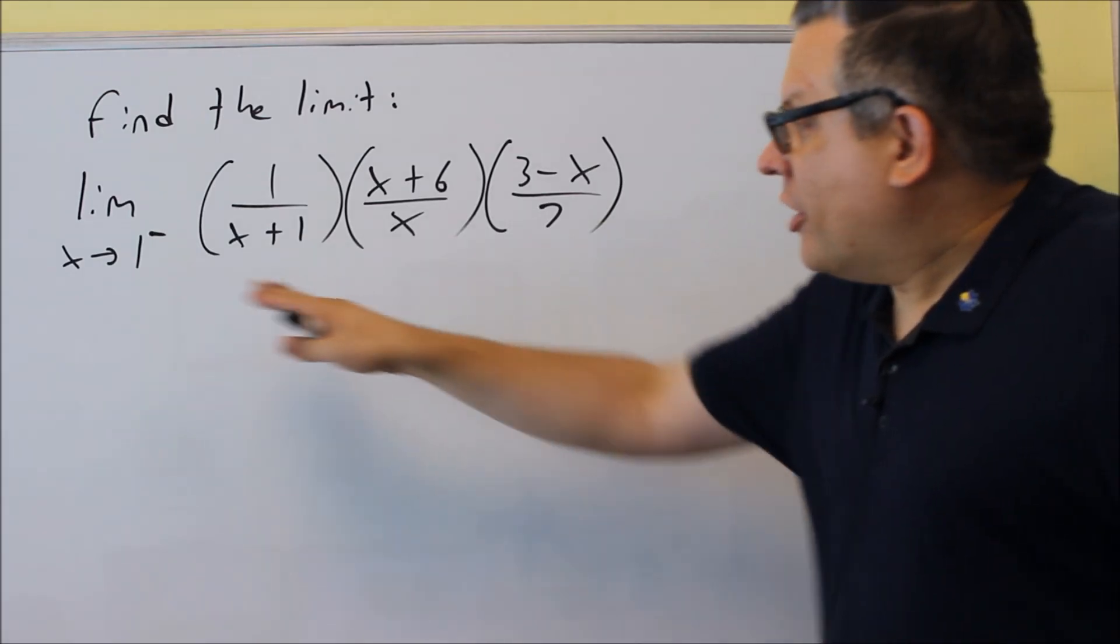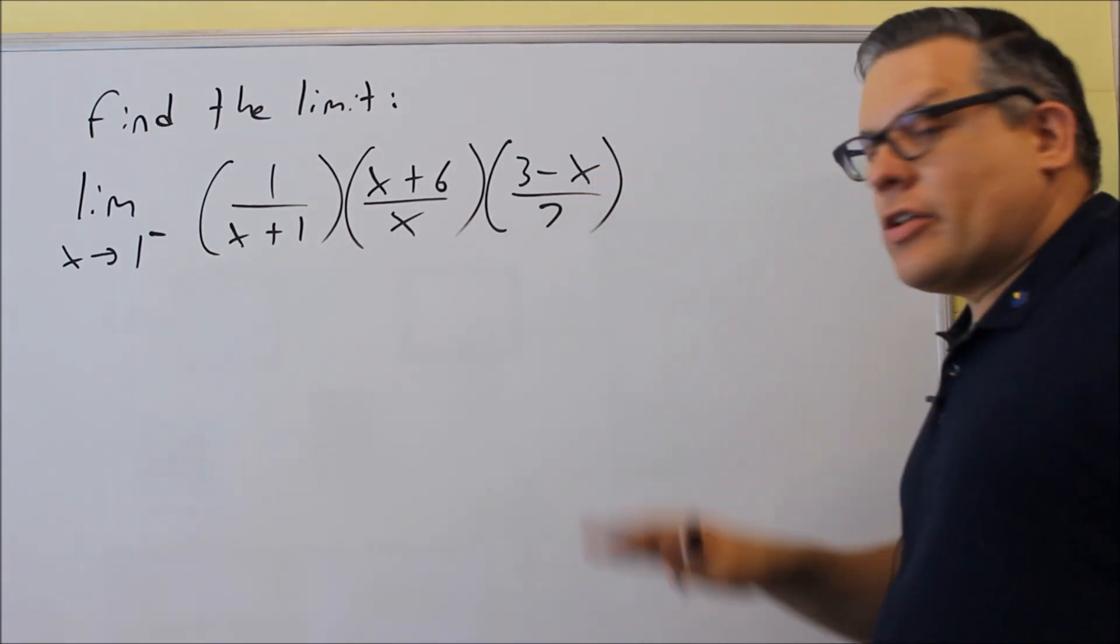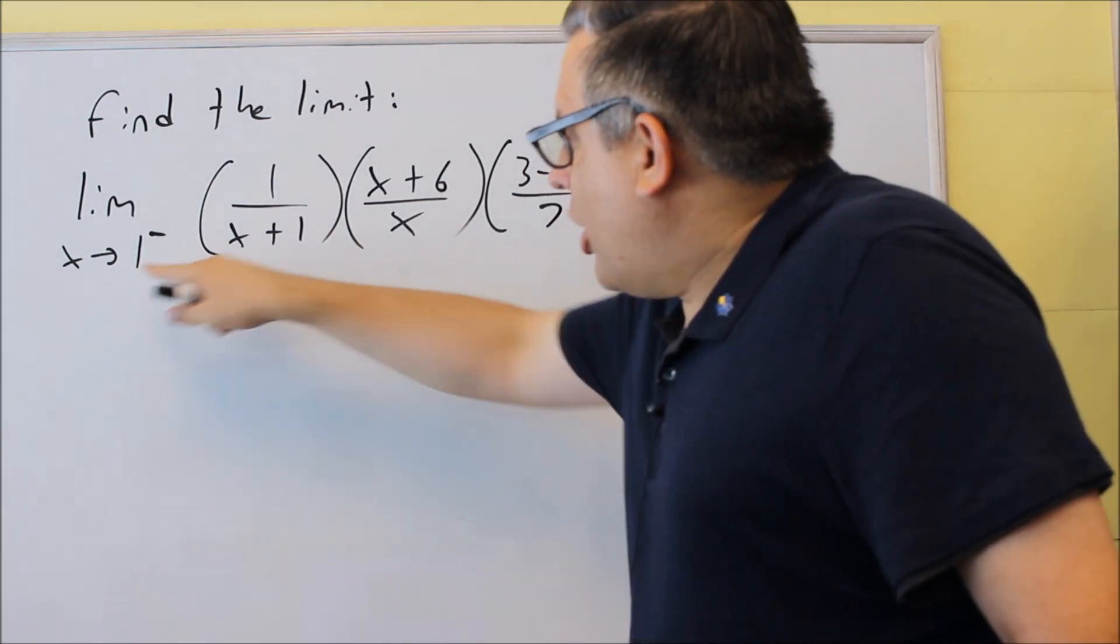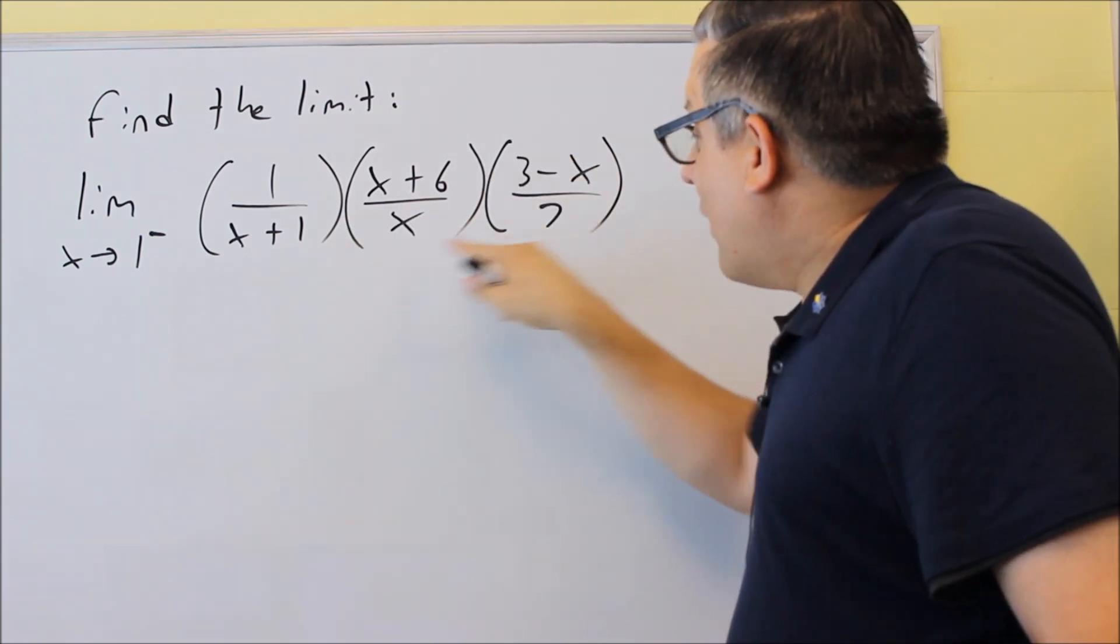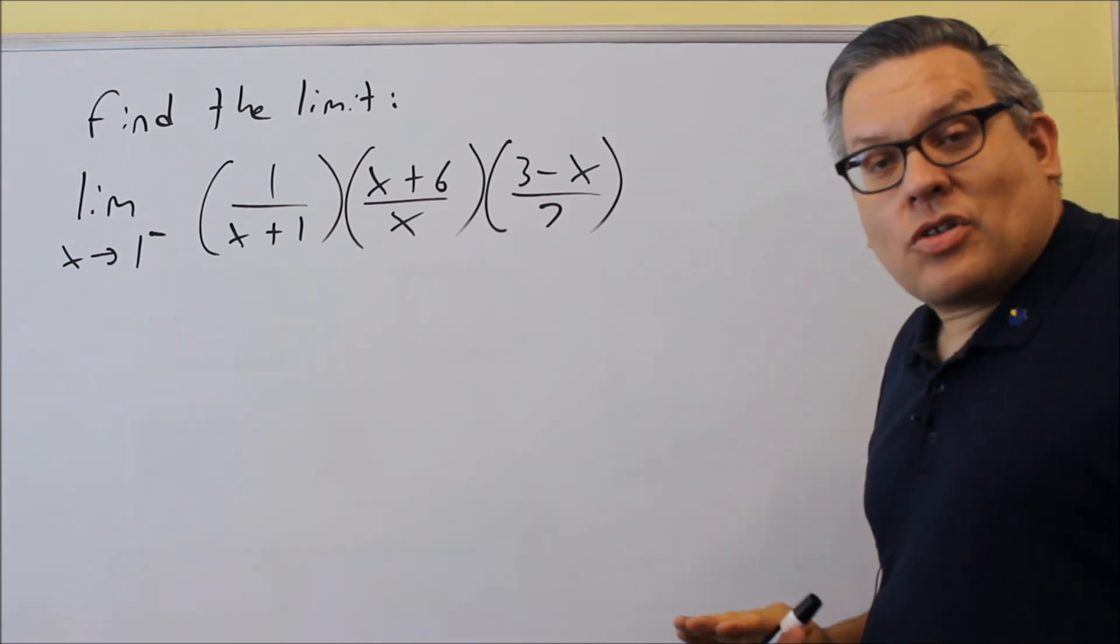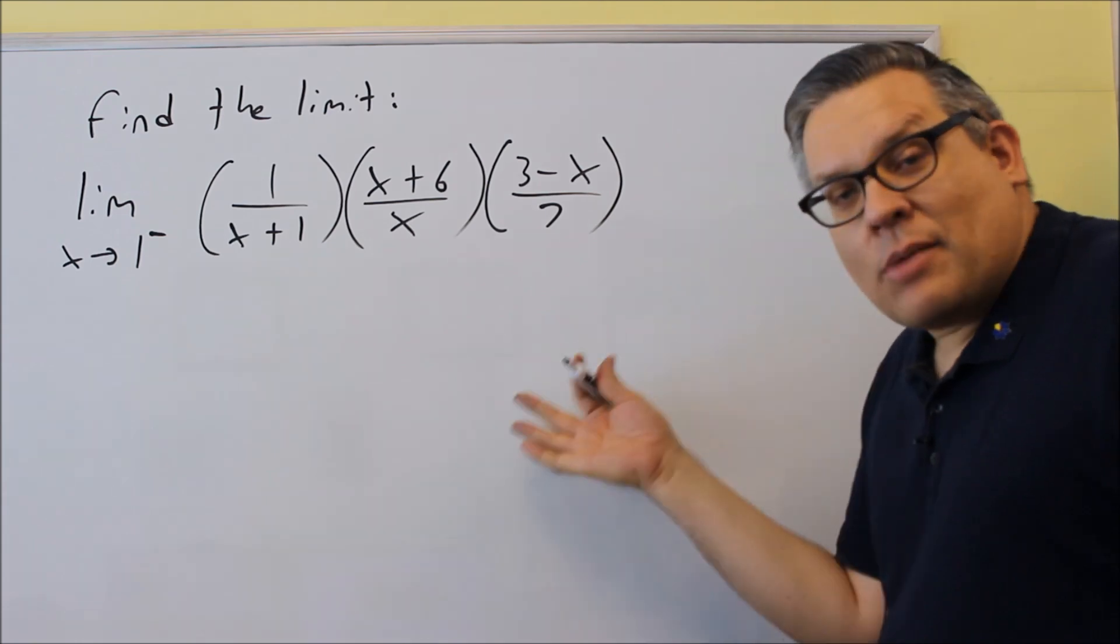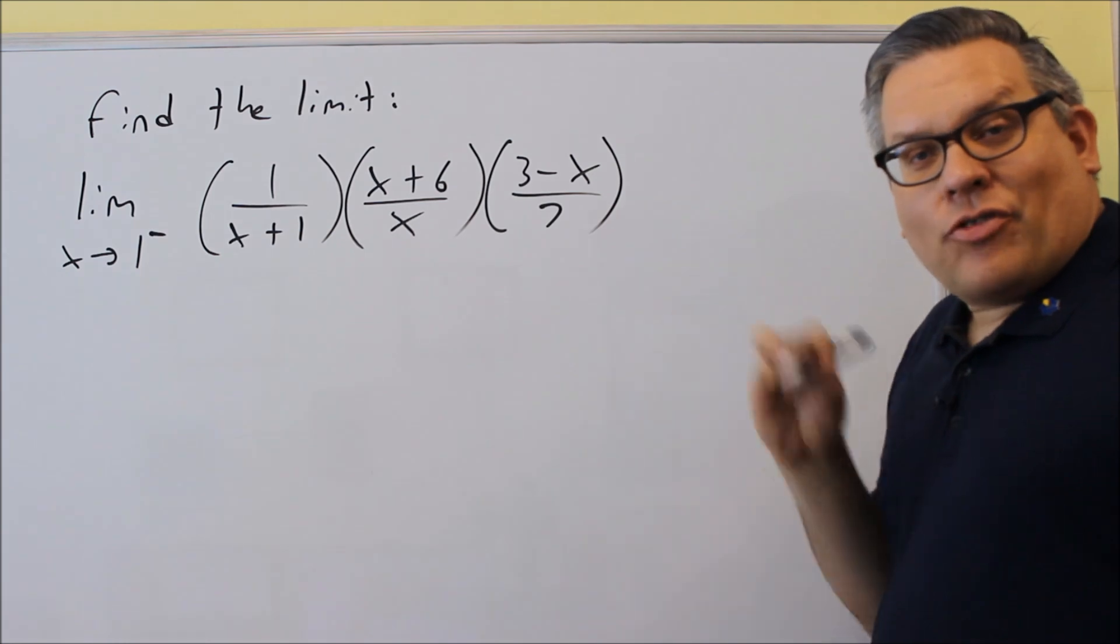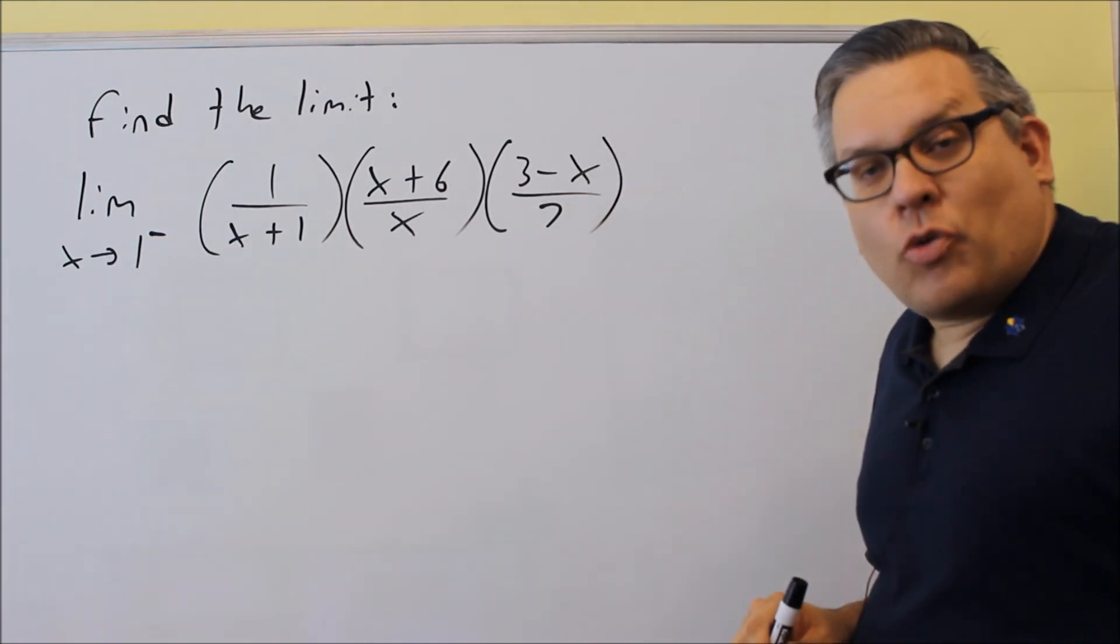Okay, next one we want to find the limit. Another one of these one-sided limits, and we want to do this algebraically. Now this time we don't have a graph that's provided. Now if I take 1 and I put it into this one, I do not have any of the denominators going to 0. So that's good because this one then I don't have to worry about doing any kind of algebra techniques. Sometimes again you can just plug the number directly in. So even though it's approaching 1 from the negative side, I'm still just going to treat this as if x is just going to 1.